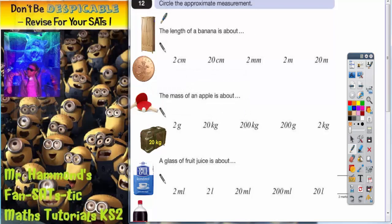Question 12. Circle the approximate measurement. Now the first one we've got to talk about, because there are three questions here, we've got to talk about the length of a banana.